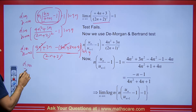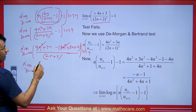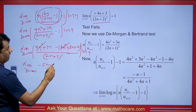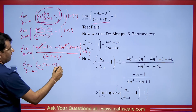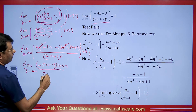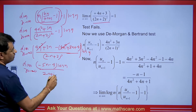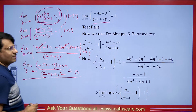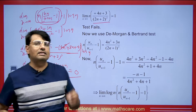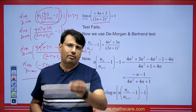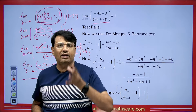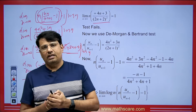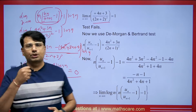After simplification, we have (−5N − 4) × log N / (2N+2)². When we evaluate this limit, the value is 0. Since 0 is less than 1, by DeMorgan's test this series is divergent. This is how we solve these types of series.